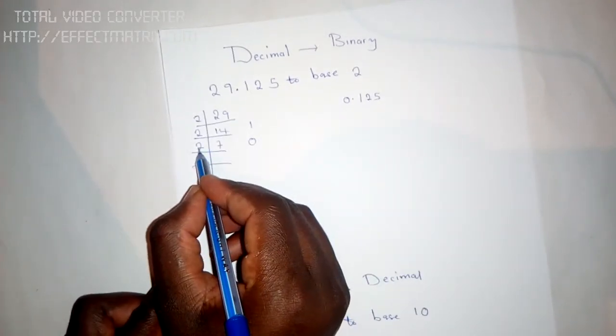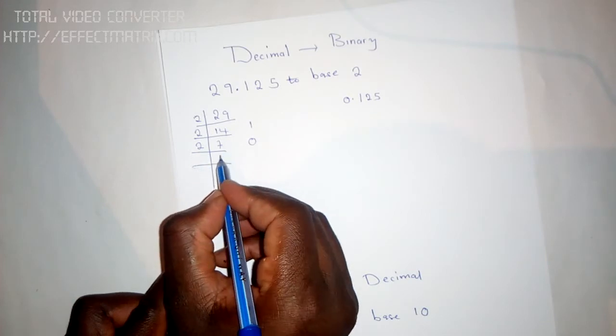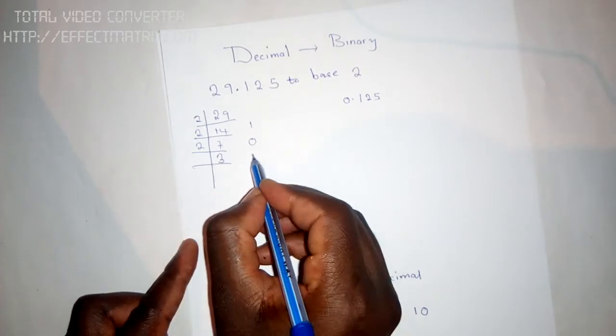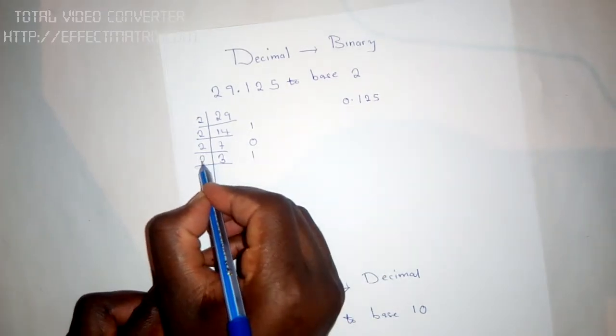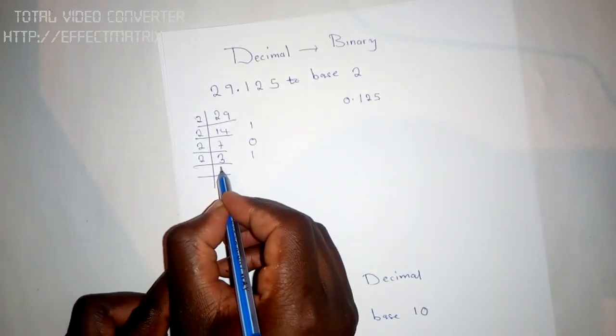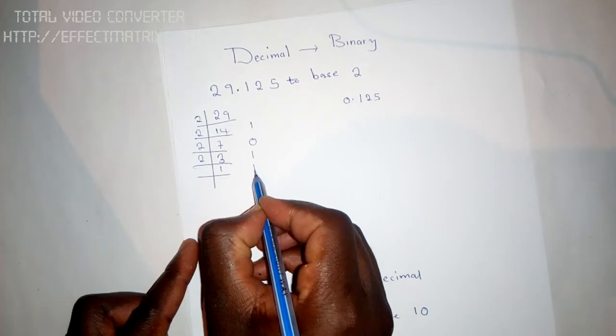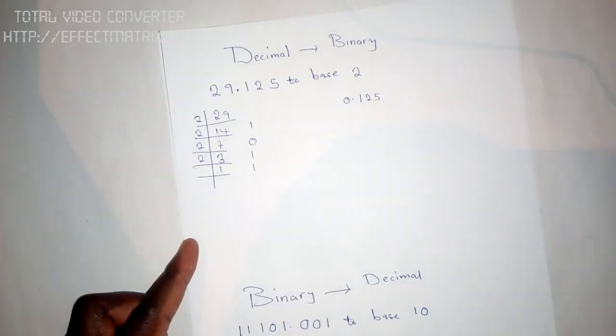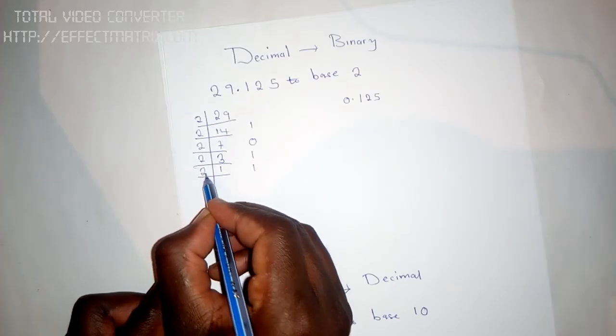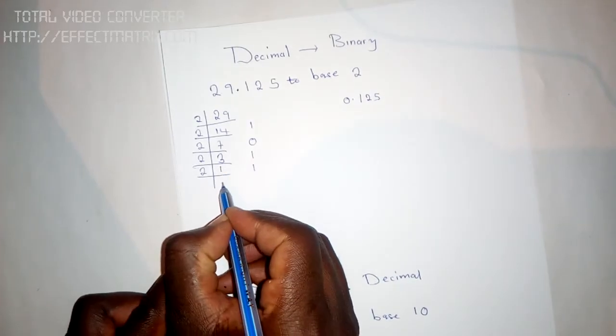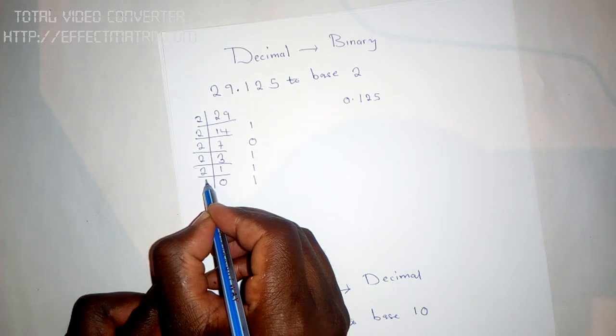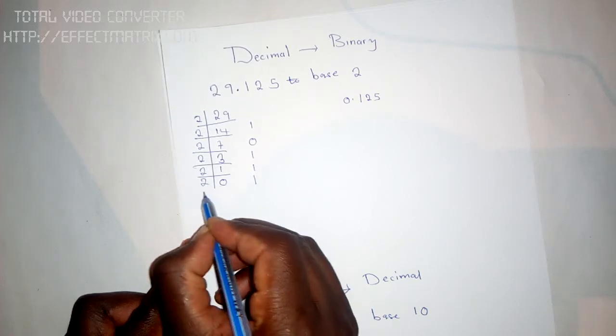2 into 7 is 3 remainder 1. Then 2 into 3 is 1 remainder 1. Then 2 into 1 is 0 remainder 1, and you're finished.